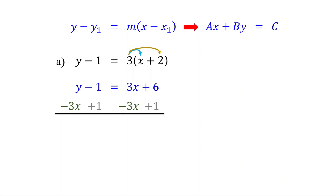On the left, these cancel, leaving negative 3X plus Y. On the right, these cancel, leaving 6 plus 1, which equals 7. Remember, in standard form, the coefficient of X should be positive, but here it is negative.